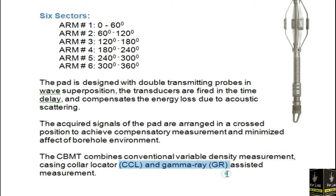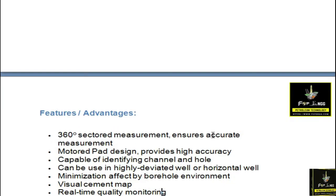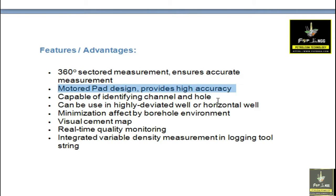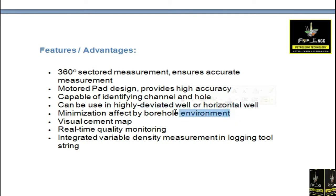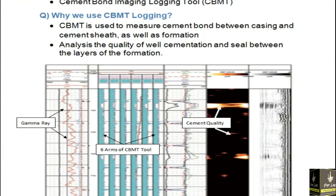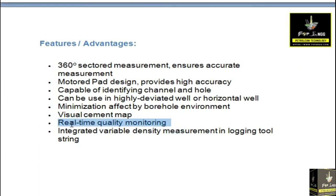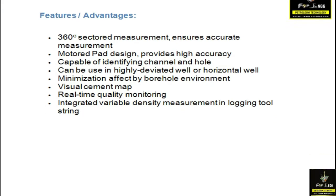The CBMT combines conventional density measurement, casing collar locator, and gamma ray measurements. The advantages of the CBMT tool are: it measures 360 degrees, the motor pad design provides high accuracy to identify channels and holes, it can be used in highly deviated and horizontal wells, it minimizes the effect of the borehole environment, it shows a visual cement map, provides real-time quality monitoring, and integrates variable density measurement in the logging tool string.